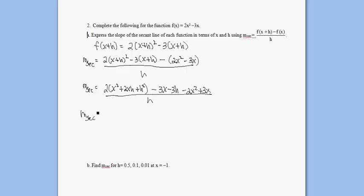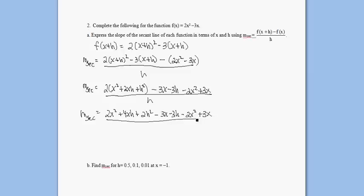Let's distribute the 2 as well. So we get 2x² plus 4xh plus 2h² minus 3x minus 3h, minus 2x² plus 3x, all over h. Notice that my terms without h's cancel — if that doesn't happen, you made a mistake. I have 3 terms, all in terms of h, and there's an h in the denominator, so all those h's are going to cancel.